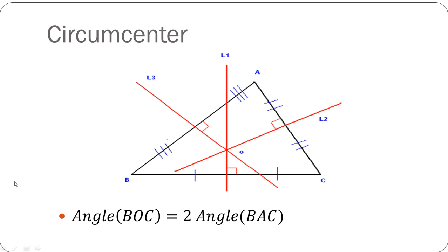The next shortcut is based on the circum center of the triangle, which is the meeting point of all the perpendicular bisectors. This property is based on the property of the circle — the angle subtended at the center is twice the angle subtended at the circumference. So, angle BOC equals twice of angle BAC, where O is the circum center.